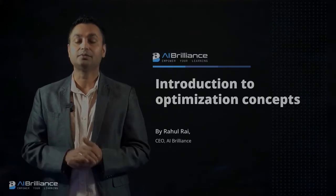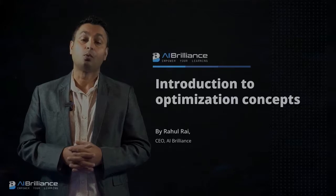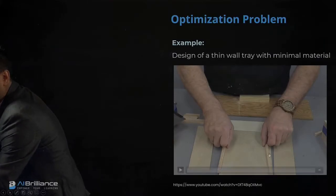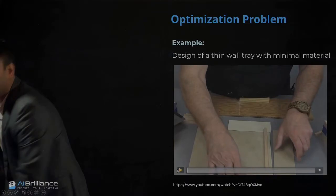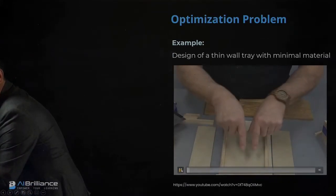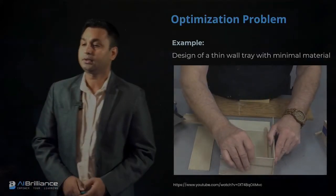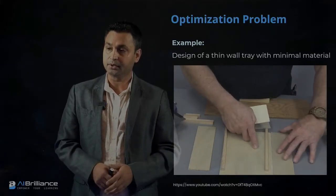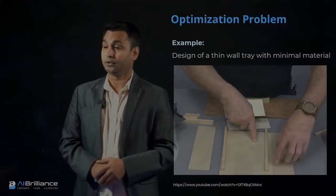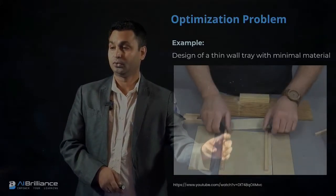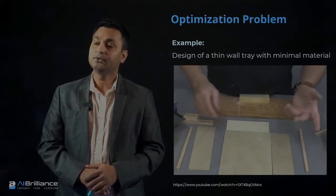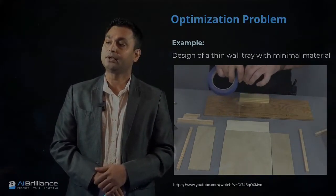Before we delve into algorithms, let's try to understand what optimization is with an example problem. In this video you can see a carpenter trying to fabricate a wooden drawer. He is using plywood and constructing a drawer by cutting rectangular pieces — if you count them, there are five rectangular pieces being cut. He will then use an assembly process with this thin plywood to create the drawers.